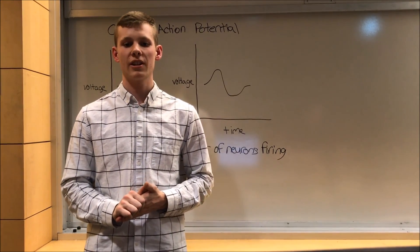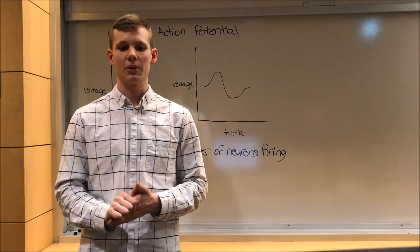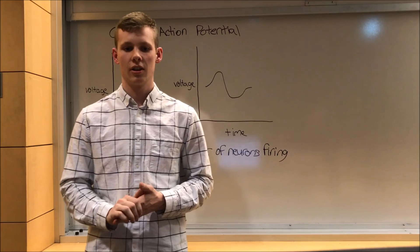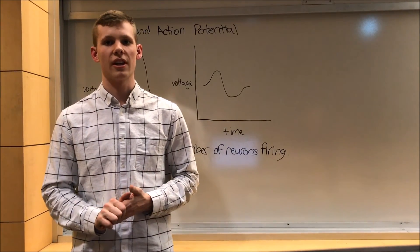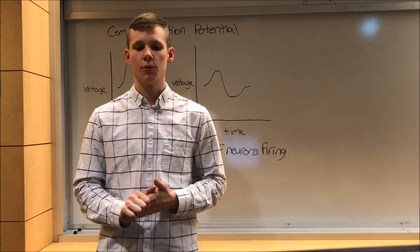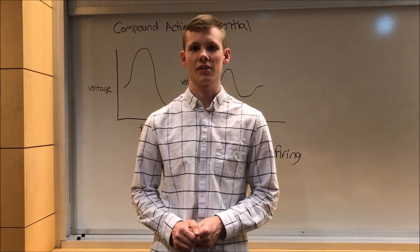Action potentials can spread down a neuron because when one area reaches threshold, the neighboring areas become positive to reach threshold and start their own action potentials. Just like when one domino falls, the next fall in line. The action potential just moves down a line, reaching threshold as its neighboring areas reach threshold. We hope you enjoyed this lecture on action potentials and compound action potentials, and that you have fun with the following lab.